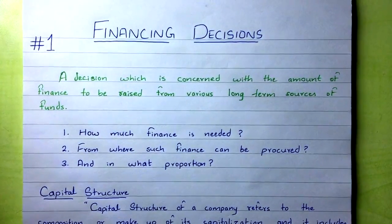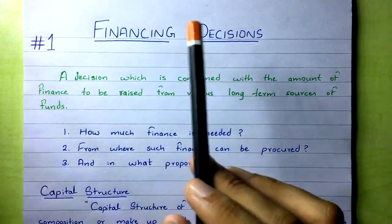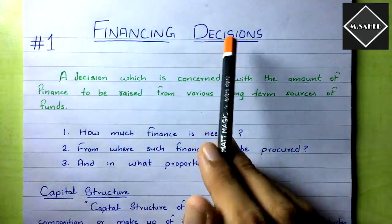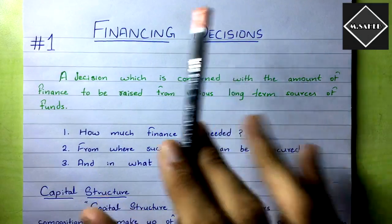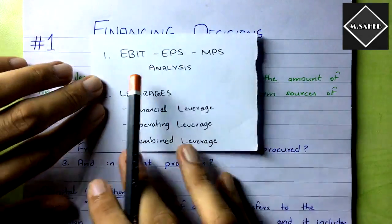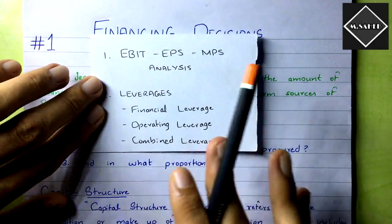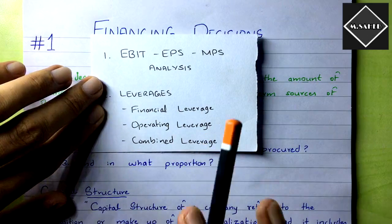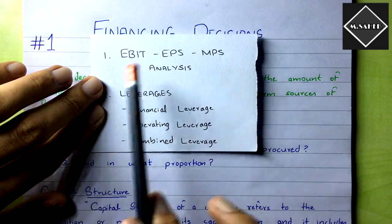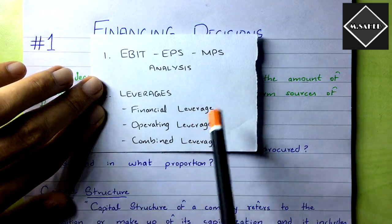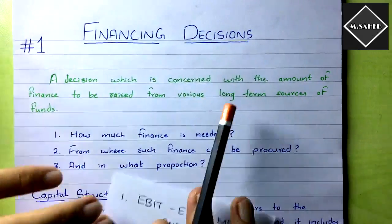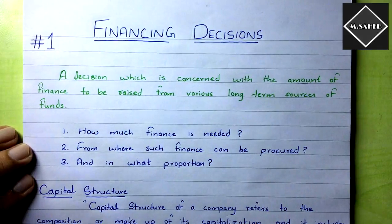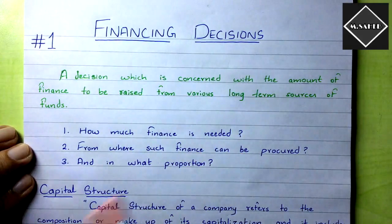In this video we're going to start a new chapter of financial management — financing decisions. This chapter is very simple because it covers EBIT EPS MPS analysis and problems on leverages: financial leverage, operating leverage, and combined leverage. In this video we'll see the introduction of the chapter, what is meant by financing decisions, and what is meant by capital structure.